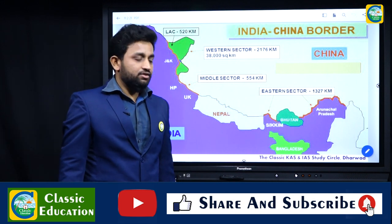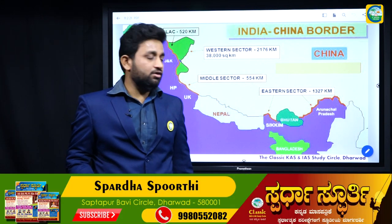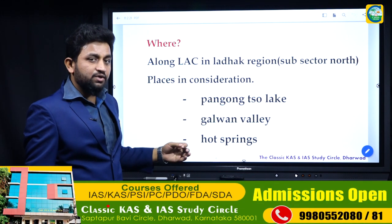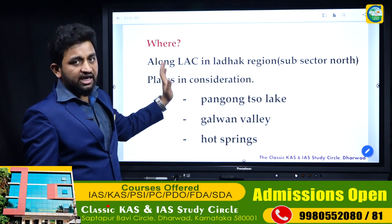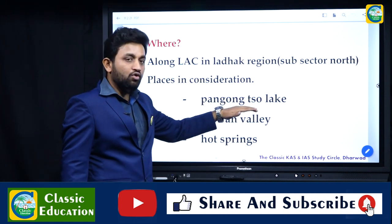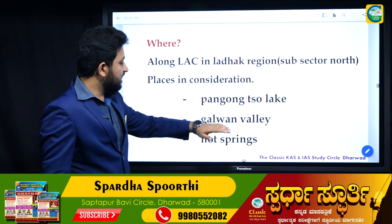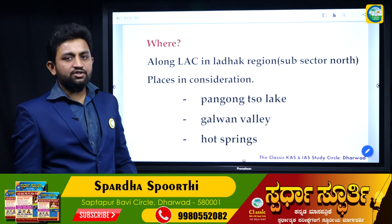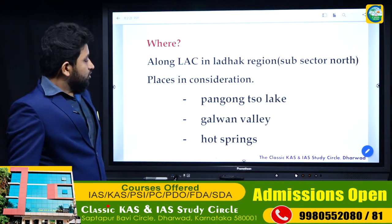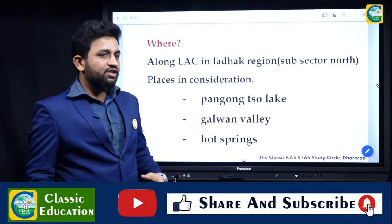The clashes took place in three places along the western sector, also known as Sub-Sector North, in the Ladakh region. The places in consideration are: Pangong Tso lake — a very important lake whose geographical location should be known for examination purposes — the Galwan Valley where the present clashes are taking place with many casualties reported, and the Hot Springs area.